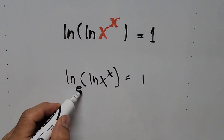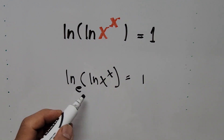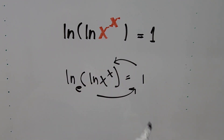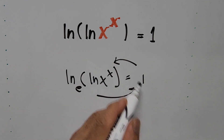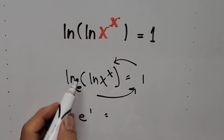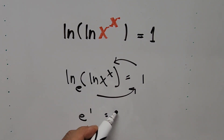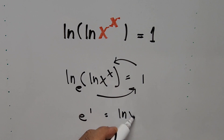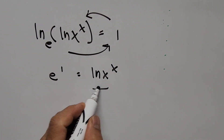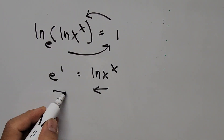Natural logarithm is base e, so we transform this into exponential form following this arrow. E to the power of 1 is equal to the quantity in the parentheses, which is natural logarithm of x to the power of x.